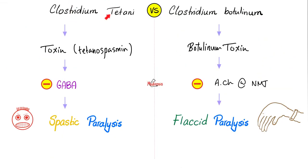As you remember, Clostridium tetani produces a toxin which inhibits GABA. GABA is inhibitory, so when I inhibit the inhibitory, I will be excitatory — spastic paralysis. Versus Clostridium botulinum, which releases botulinum toxin that inhibits acetylcholine release at the neuromuscular junction. When I inhibit the release of acetylcholine, my muscles will not contract, i.e., flaccid paralysis.